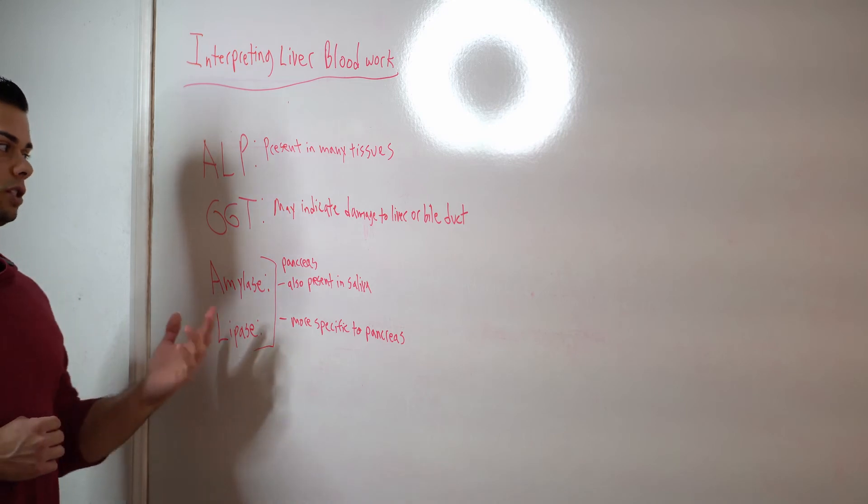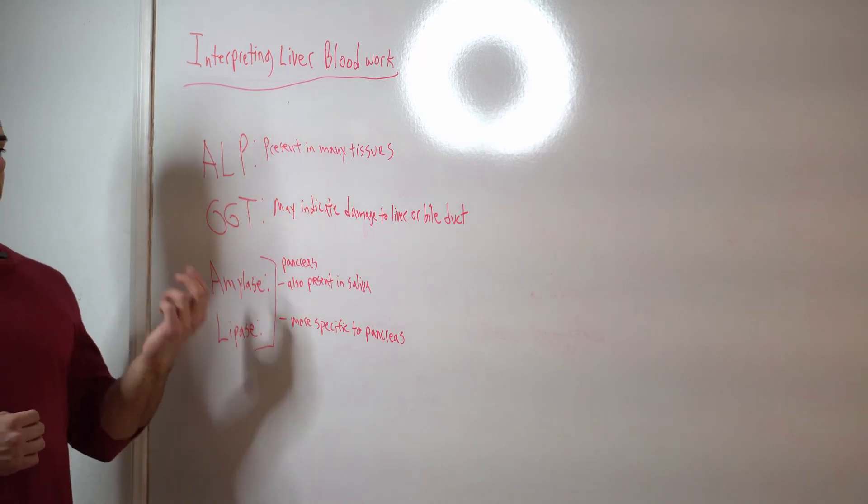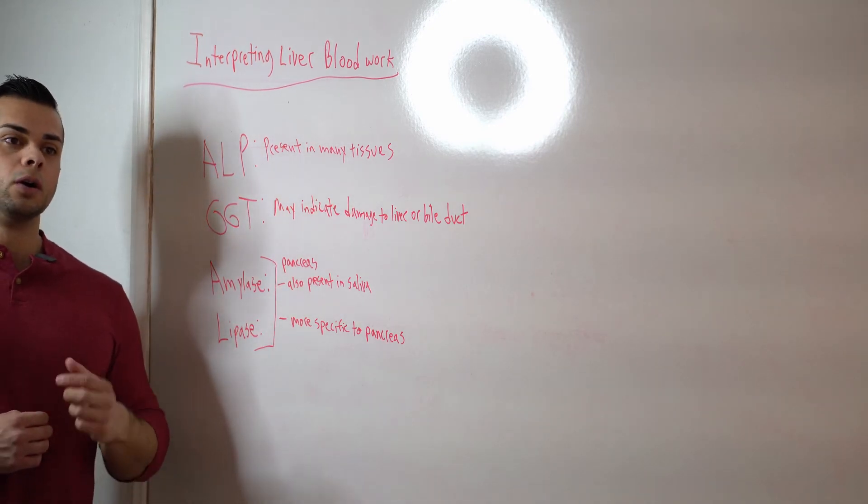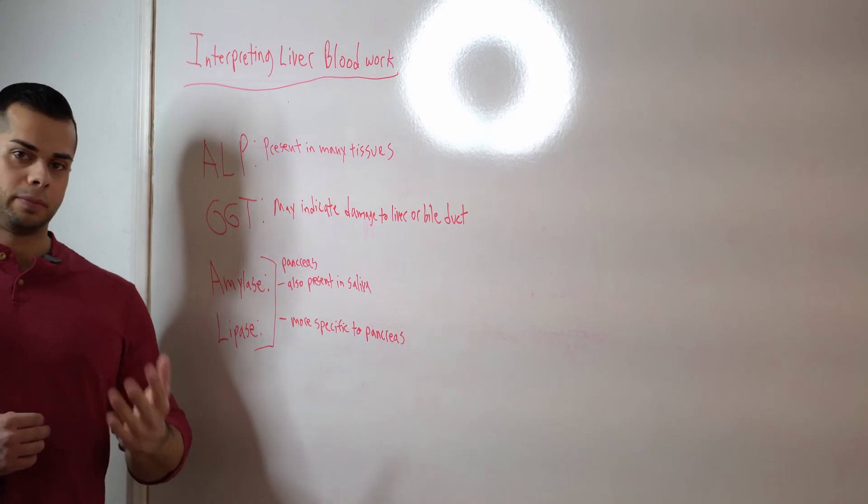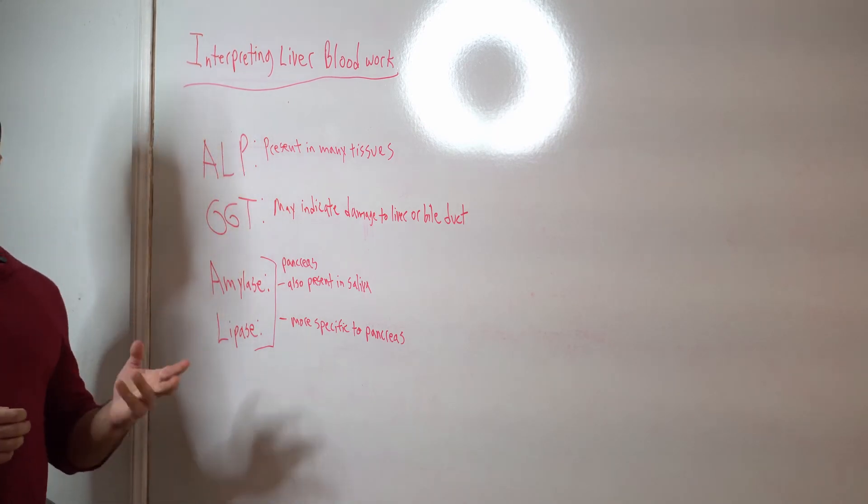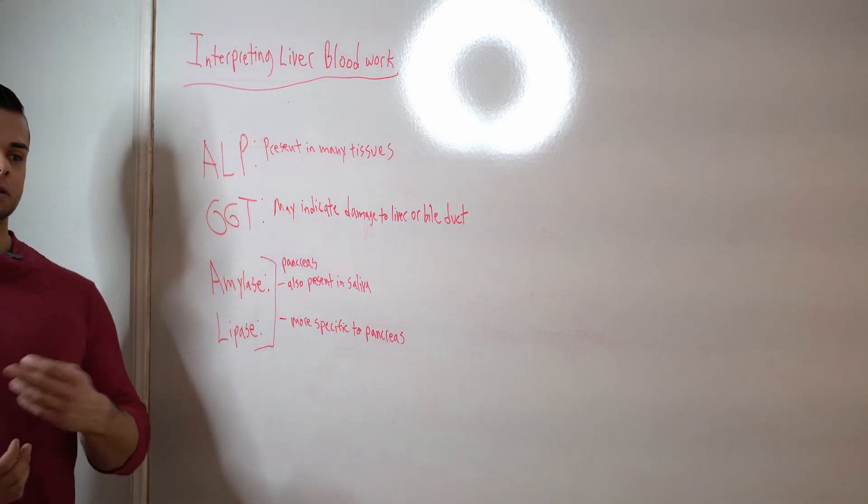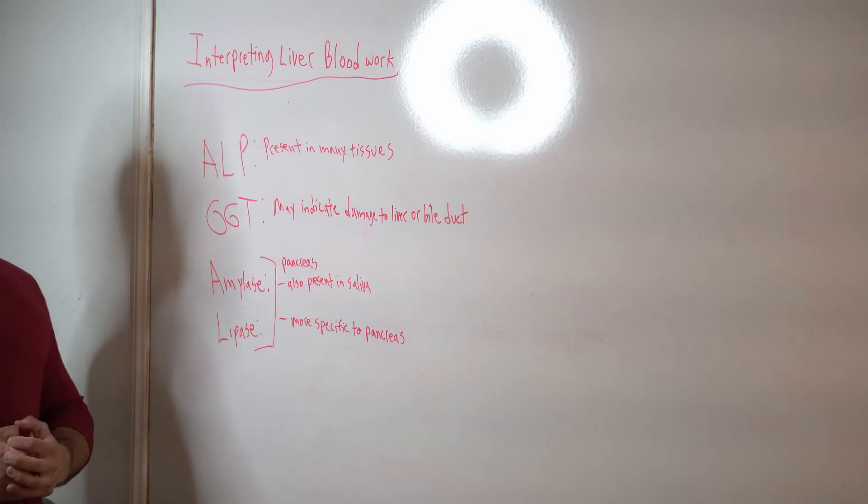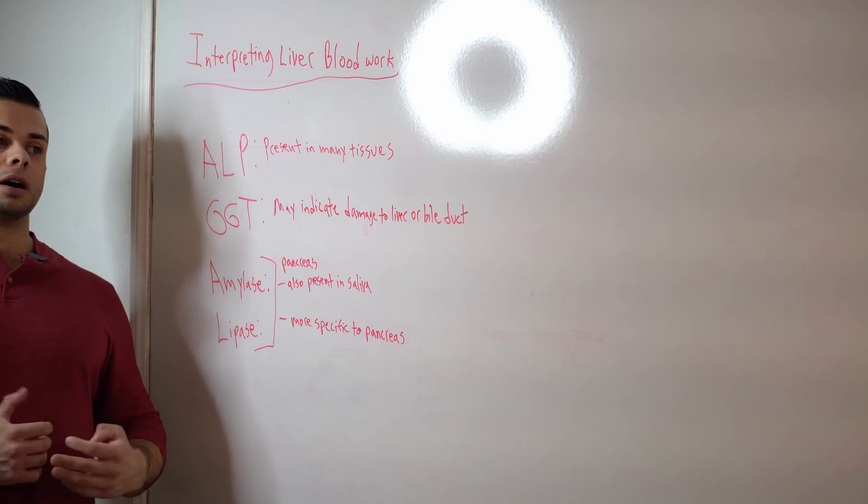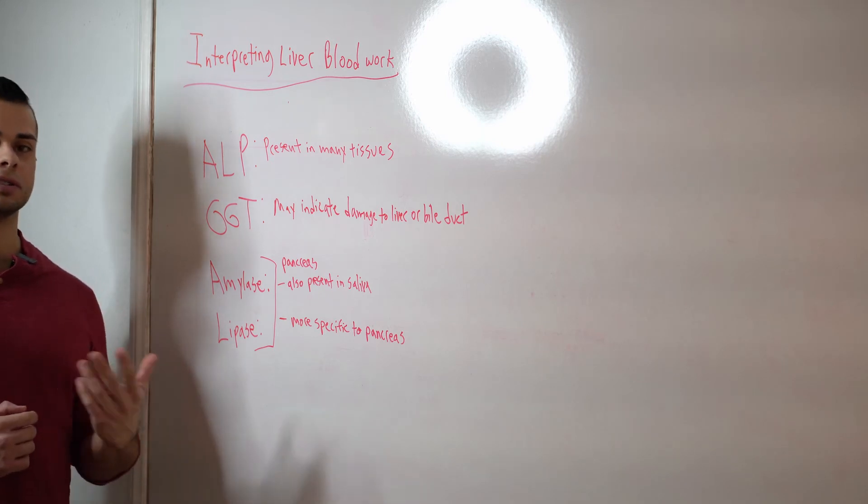GGT can be more associated with the liver and also the biliary system, which includes things like the bile duct and the gallbladder. So if GGT is elevated, that may indicate that there is damage to the liver or even the gallbladder or the bile duct. Again, we can pair this with other testing such as ALT to get a more specific answer because GGT is also present as an enzyme in other tissues in the body as well.